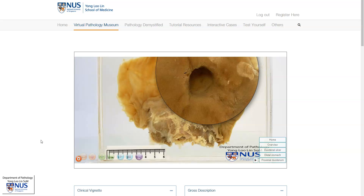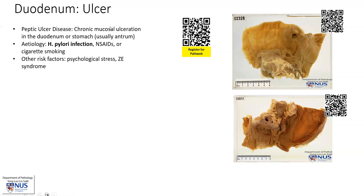Let's take a closer look at peptic ulcer disease. Peptic ulcer disease is chronic mucosal ulceration that involves the duodenum or the stomach, usually the distal stomach. It is caused by H. pylori infection most commonly, and can also be caused by NSAIDs or cigarette smoking. There are some risk factors that contribute to it, including psychological stress where there is increased gastric acid secretion.